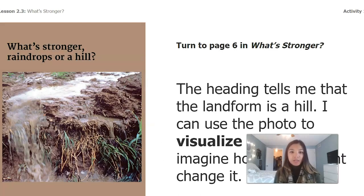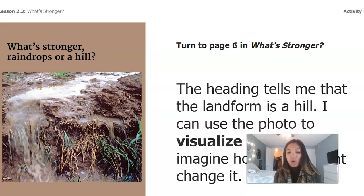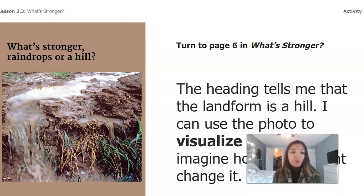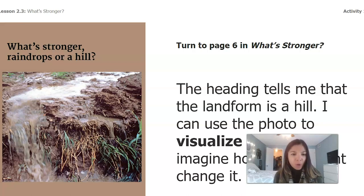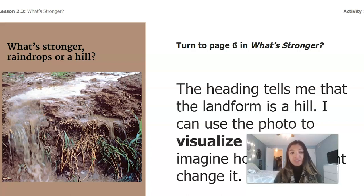This is from page six in our book, What's Stronger? The heading tells me that the landform is a hill and I can use the photo to visualize a hill and imagine how water might change it. When I'm looking at the picture, I notice that there's water running through it. I'm thinking that over time as the water continues to run down this hill, maybe the opening where the water is will get wider eventually. It was probably solid dirt at one time, and it seems like that dirt is becoming more watery and maybe even flowing down the hill.